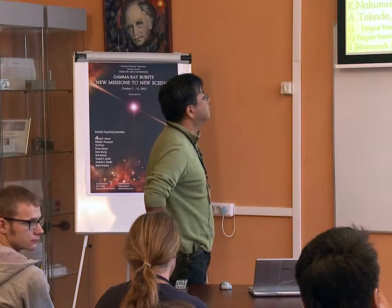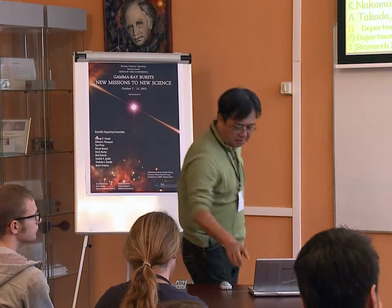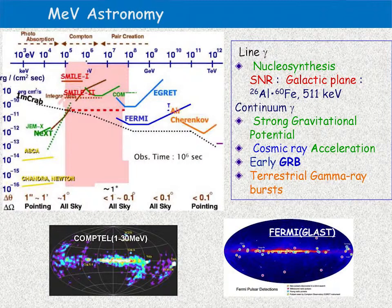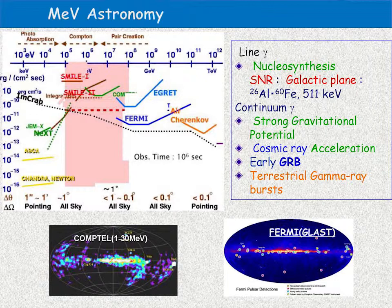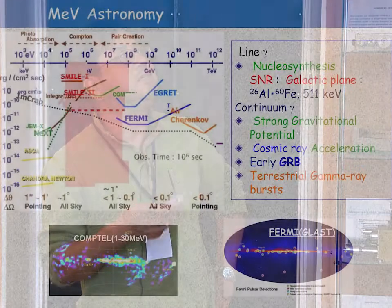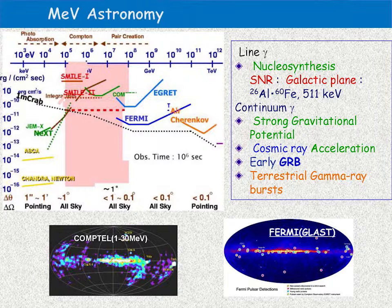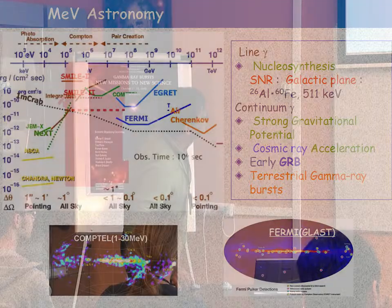We also mentioned the measurement of polarization. First, I would like to briefly introduce MeV astronomy. As you know, in the MeV region, there is quite little data — only 30 objects were found, and sensitivity is quite low, about two orders compared to even the GeV regions. Also, all-sky survey data presented was only so complete.